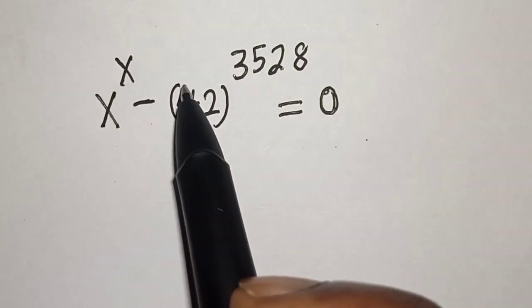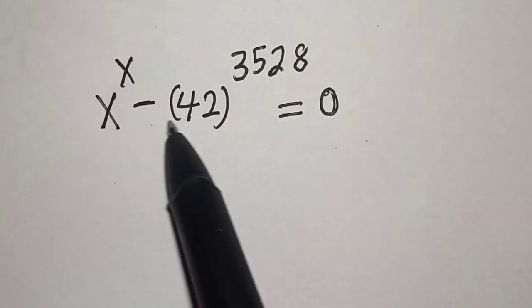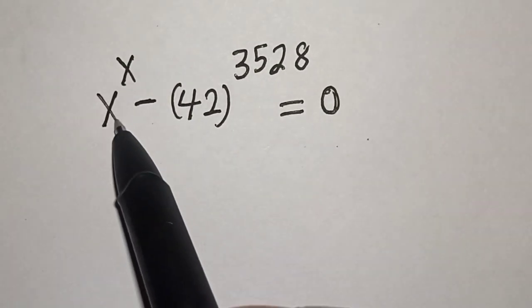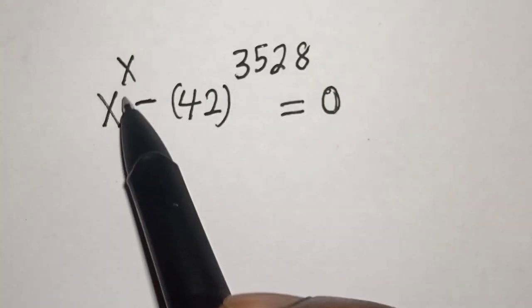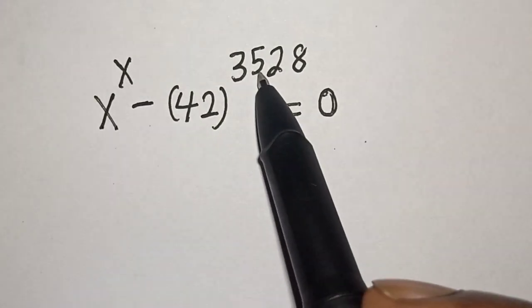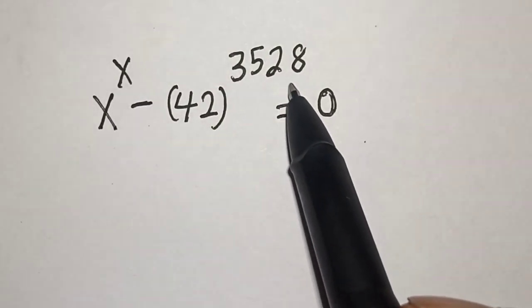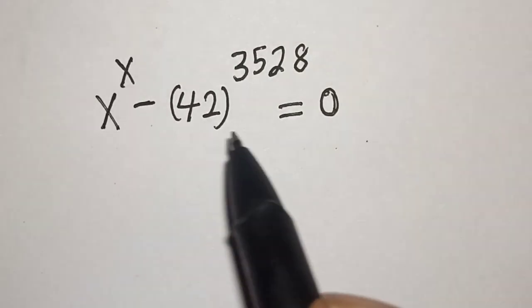Hello, welcome to Magist. In this class, we want to find the value of x from this equation: x raised to power x minus 42, raised to power 3528, is equal to 0.